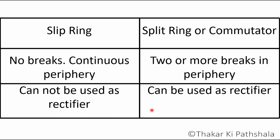Split ring has a minimum of two or more breaks in its periphery. Whereas in a slip ring, there is no break in its periphery — it is continuous, just like a finger ring.